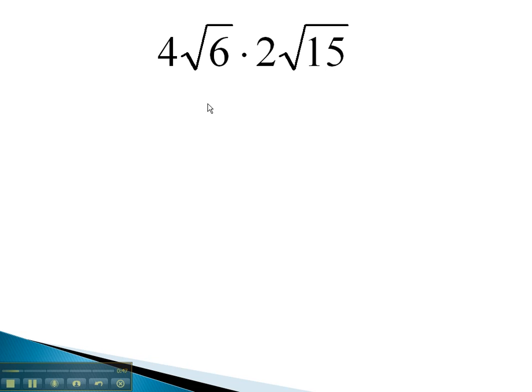In this problem, we can multiply the outside numbers, 4 times 2, to get 8. Underneath the square root, we can multiply the numbers under the square root 6 times 15 to get 90.